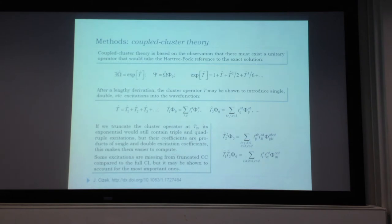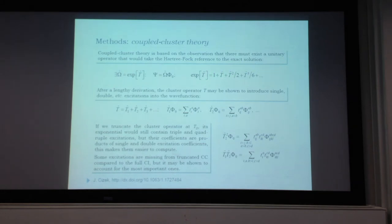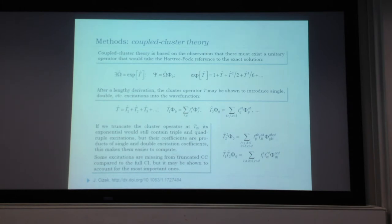How does coupled cluster theory achieve that? From simple Hilbert space theory, if φ₀ is the ground state Hartree-Fock solution and ψ is the exact solution to Schrödinger's equation, there must exist a unitary transformation taking one into the other. Any unitary transformation is an exponential of some anti-Hermitian operator. One can prove that the cluster operator T introduces single, double, triple, and higher excitations into the system.